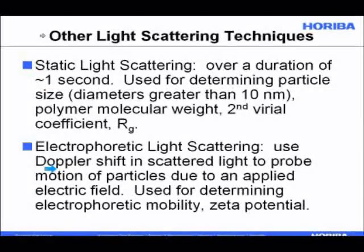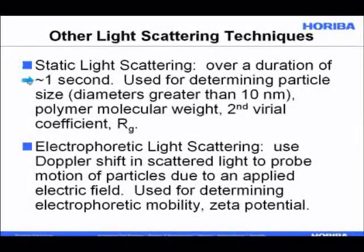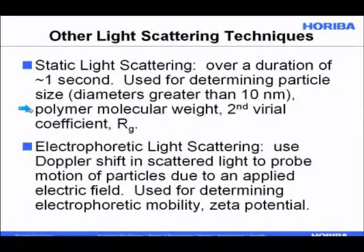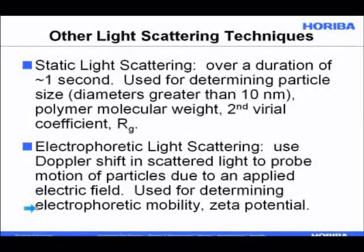There are other light scattering techniques. The first is static light scattering, where measurements are made over about one second — useful for finding particle size for diameters greater than about 10 nanometers, such as with laser diffraction instruments like the LA-950 from Horiba. With a different configuration, you can find polymer molecular weight and second virial coefficient. Electrophoretic light scattering applies an electric field and uses light scattering to probe particle motion to find electrophoretic mobility and zeta potential.